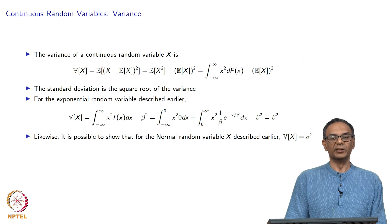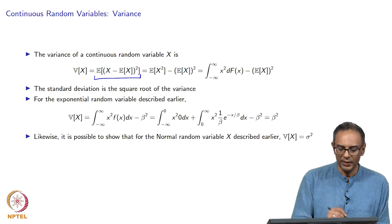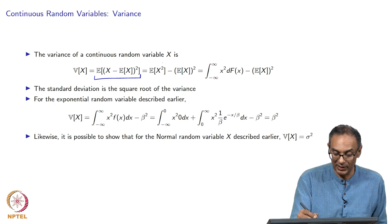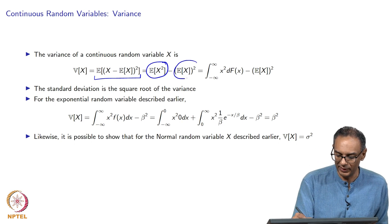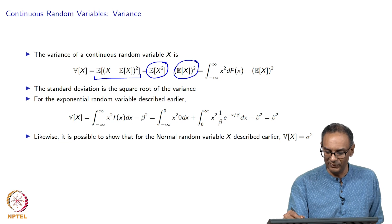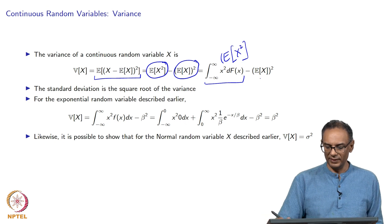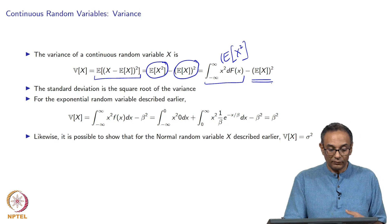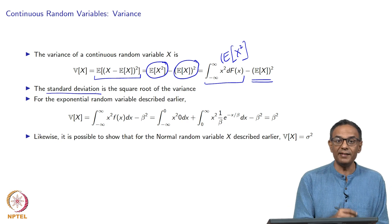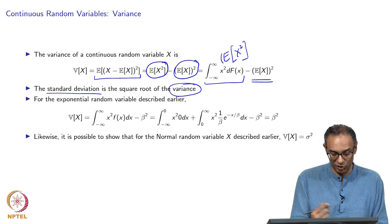Now we move on to variance. The variance of a continuous random variable, much like the discrete case, is the expected value of the squared difference of x from its mean, which equals E[x^2] minus (E[x])^2. We write this as the integral from negative infinity to infinity of x^2 times df(x), minus the usual expected value of x squared. The standard deviation is simply the square root of the variance, and this is always true for both discrete and continuous cases.